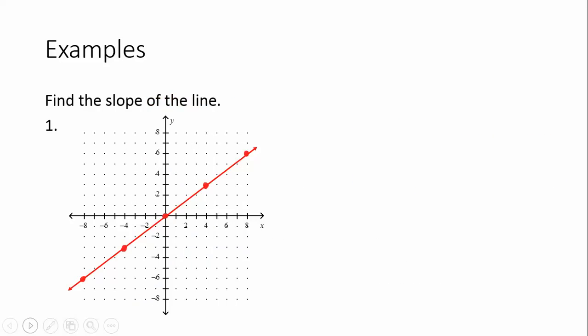Let's find the slope of the line. When you are given a graph and asked to find the slope, one thing you can do is count rise over run. Slope is often indicated using the letter m. What's nice about a graph is you can look at any two points — because slope is constant, no matter where on the line you are, you will always get the same answer. However, we do want to make sure we are always reducing the slope to simplest form.